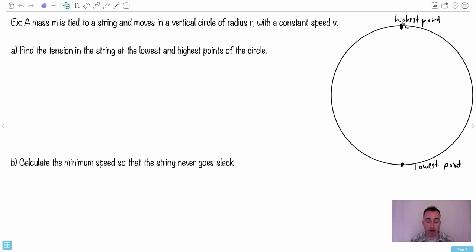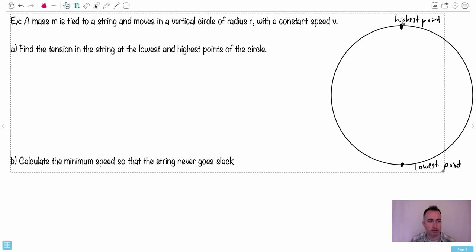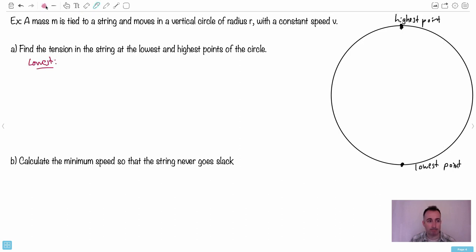I've sort of labeled them, so we've got highest point and lowest point here. Maybe let's do the lowest point. Maybe we'll start with that one. What happens at the lowest point here? Maybe we can start by drawing the vectors.